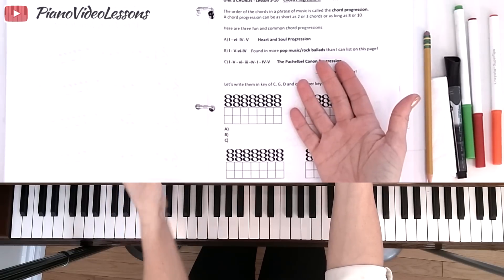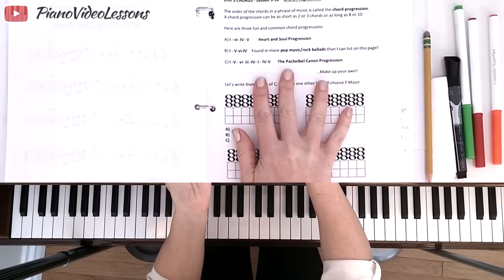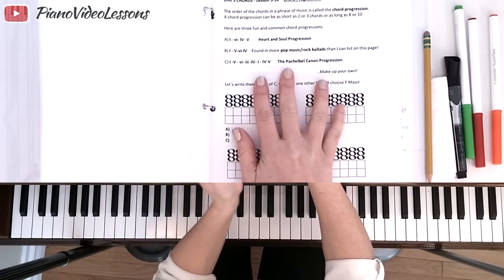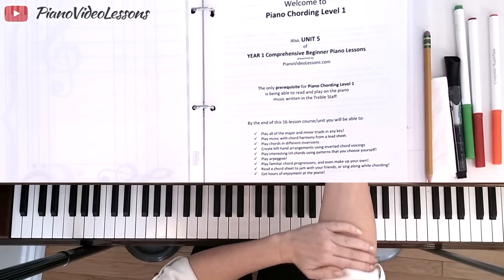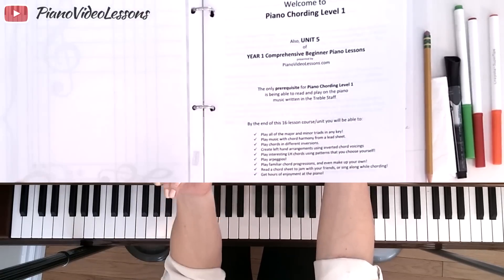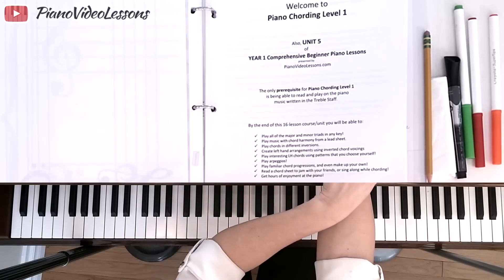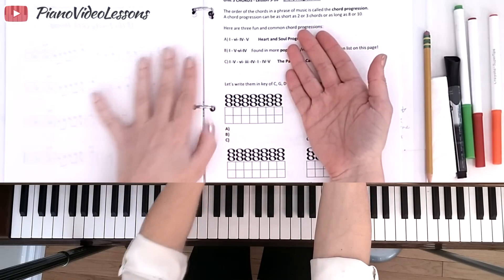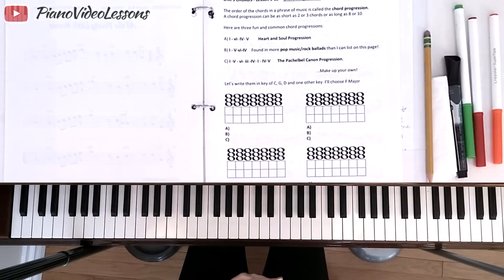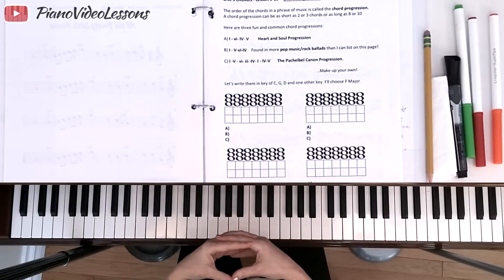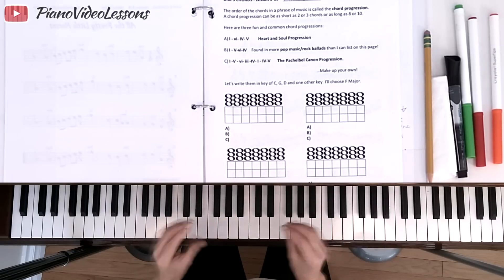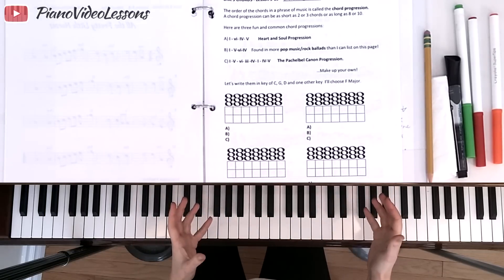Today's lesson is lesson number 10, and we're going to be learning chord progressions. This is video number 74 on YouTube, and it's part of Piano Chording Level 1, which is a standalone 16-lesson unit that will get you started playing piano chords and reading lead sheets.